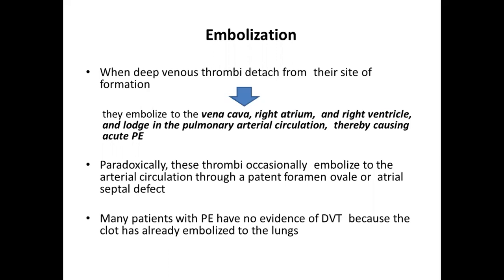However, if a patient has a defect in the atrial septum — also known as patent foramen ovale — then thrombi from venous sources can cross into the arterial circulation. Many patients, when finally diagnosed with pulmonary embolism, may not have evidence of deep vein thrombosis, because the clot that formed in the deep vein of the leg may have already embolized to the lungs.